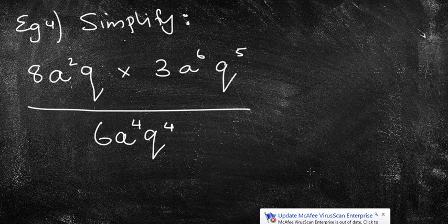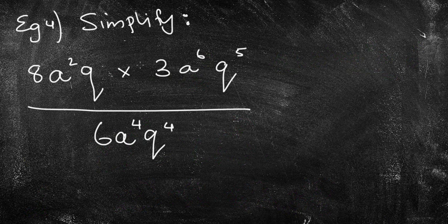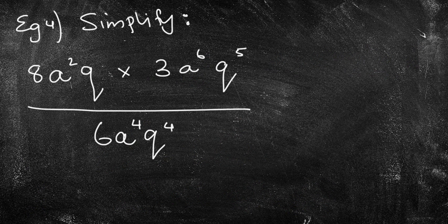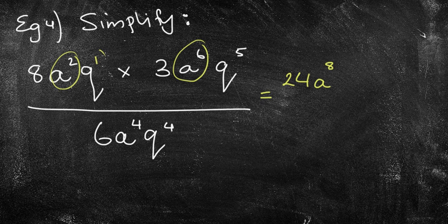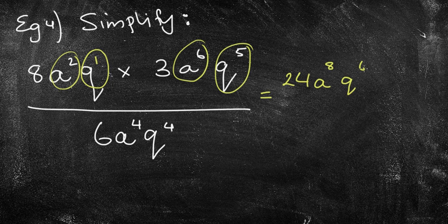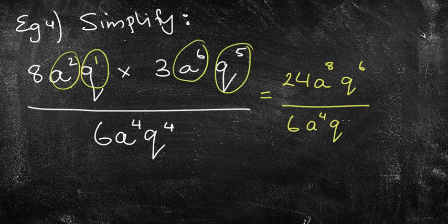Now the very last question, this is the extension stuff, the hard stuff. This is where you have some stuff on the top of the fraction that we probably need to simplify first of all. So can you simplify that first? 8 times 3 is 24. A squared times A to the 6. We're going to add those numbers together to make A to the power of 8. Q to the power of 1 times Q to the power of 5 is Q to the power of 6. I'm going to put that over 6A to the 4, Q to the 4.